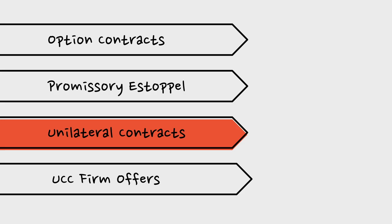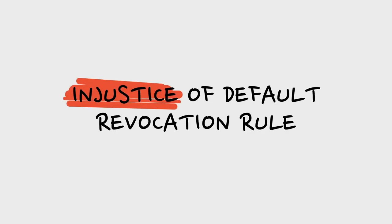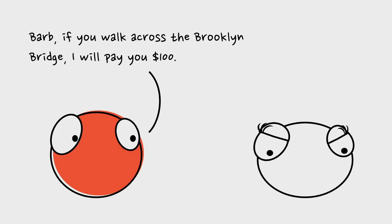What about unilateral contracts? An offer for a unilateral contract can only be accepted through the full performance of the offeree — the contract doesn't form until the offeree completes performance. When it does form, it's only executory on one side — the offeror's. Using the default rule that an offeror is free to revoke any time prior to acceptance works an injustice in this context, particularly with unilateral contracts.